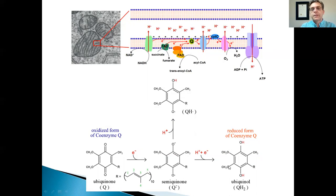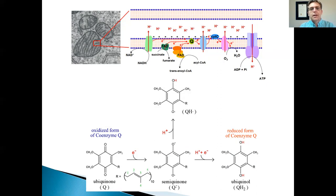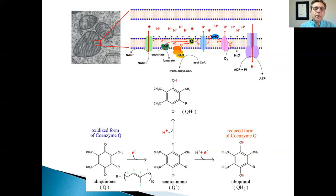Both forms are stable — both ubiquinone and ubiquinol are perfectly stable. The unstable part is semi-ubiquinone, where you have two negative charges, one on top and one at the bottom. It doesn't remain like this for long; this whole process happens very quickly, multiple times, all the time. That's what Coenzyme Q10 does — it moves electrons along, turning from ubiquinone to ubiquinol over and over again. Once ubiquinol gives away its electrons and hydrogen, it turns back into ubiquinone and repeats. Hopefully this clarifies the stability issue.